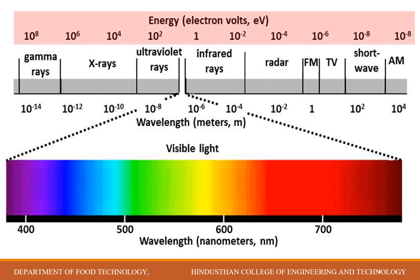Most spectroscopic techniques use ultraviolet and visible radiation — that is, UV-visible spectroscopy — which is the most commonly used analytical instrument employing these two electromagnetic radiations. Another widely used wavelength region is infrared rays.